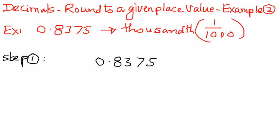The number just next to the decimal point is the tenth place. This is the hundredth place, and 3 is in the hundredth place. 7 is in the thousandth place. So 7 is in the thousandth place — this is our given place value. Let's identify that.